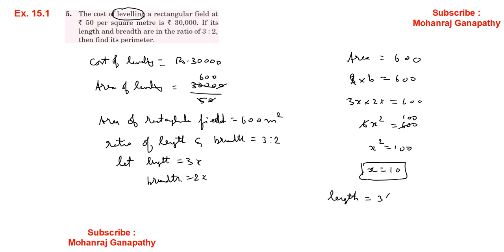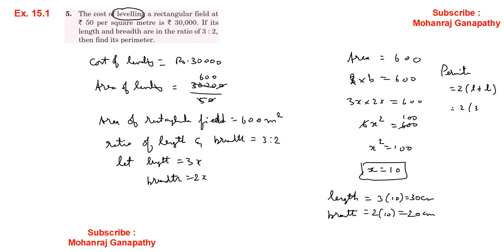Therefore, length = 3 × 10 = 30 meters and breadth = 2 × 10 = 20 meters. Perimeter = 2 × (30 + 20) = 2 × 50 = 100 meters.